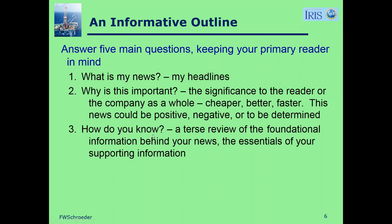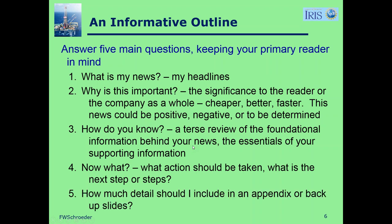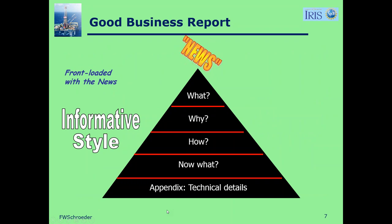The third of the five questions: how do you know this? This would be a terse review of the foundational information behind your news — the essentials of your supporting information. Fourth question: now what? What action should be taken? What's the next step or a series of steps? And then, how much detail should I include as backup? If it's a written report, we might have one or more appendices. If it's an oral report, we may have a series of backup slides we don't necessarily plan to show, but if somebody questions me about my trap or the well location, I might pull up a couple of extra images. So for a good business report: what's the news, why it's important, how the conclusion was reached, what's next, and then the appendix.